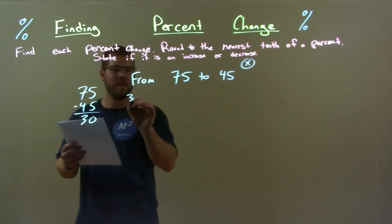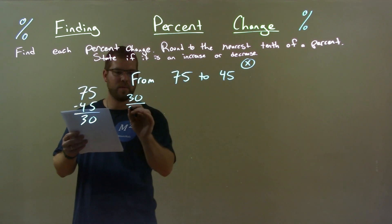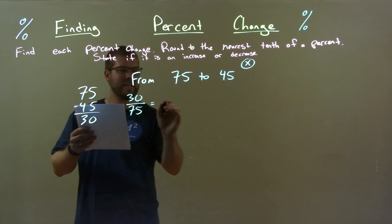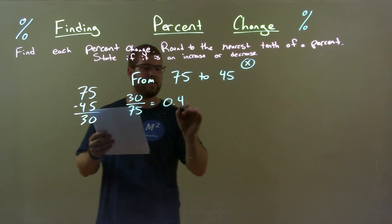Then, we take that 30 and divide it by the first number, 75, which equals exactly 0.4.